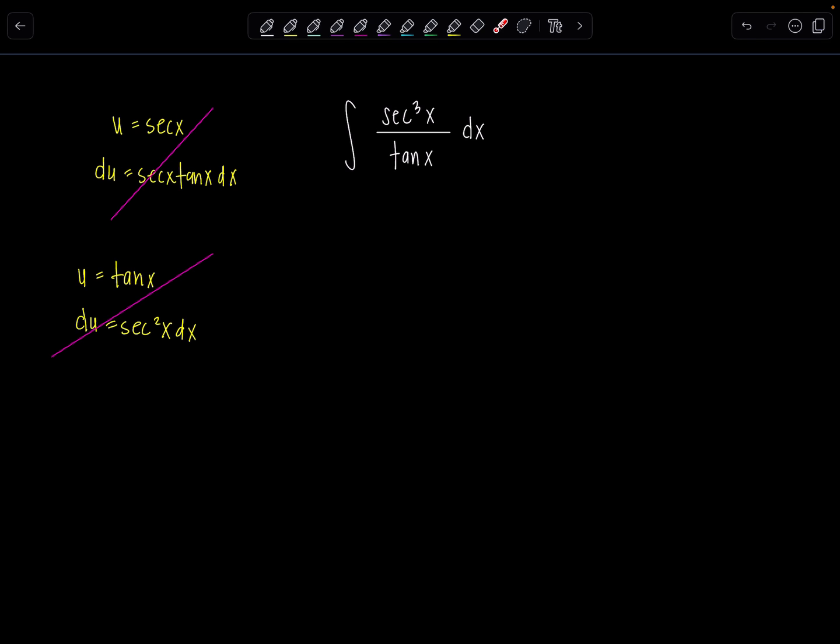So then what do we do from here? One option is you could rewrite everything in terms of sines and cosines, but I can just play around with these trig functions as is since secants and tangents seem to work nicely together in calculus. So what I did was hop to that numerator and I broke it up as secant squared x times secant x, and then this is still all over tangent x dx.